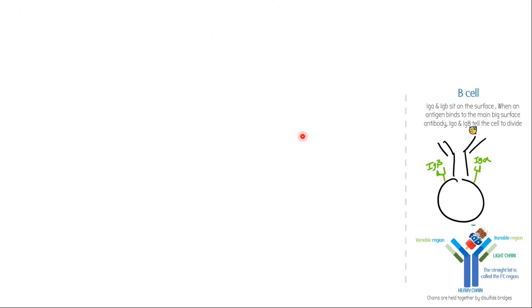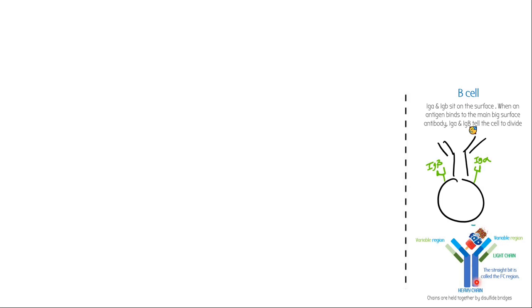B-cells and T-cells are kind of similar. We've got the structure of a B-cell here just to remind you. We've got our B-cell receptor, which becomes an antibody later on. We've also got co-stimulatory Ig-alpha and Ig-beta receptors, which double-check that when an antigen binds, everything's okay and tell the cell to go do its thing. Obviously we know the structure of an antibody — heavy chain, light chain, variable region, constant region — making up your antigen binding site and your Fc constant region, held together by disulfide bridges in an asymmetrical structure.